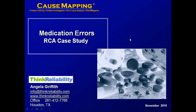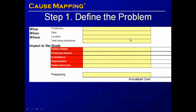In this video, we will create a proactive cause map for medication errors that occur in a health care facility. We begin with step one of the cause mapping process: define the problem. Our problem is medication errors.